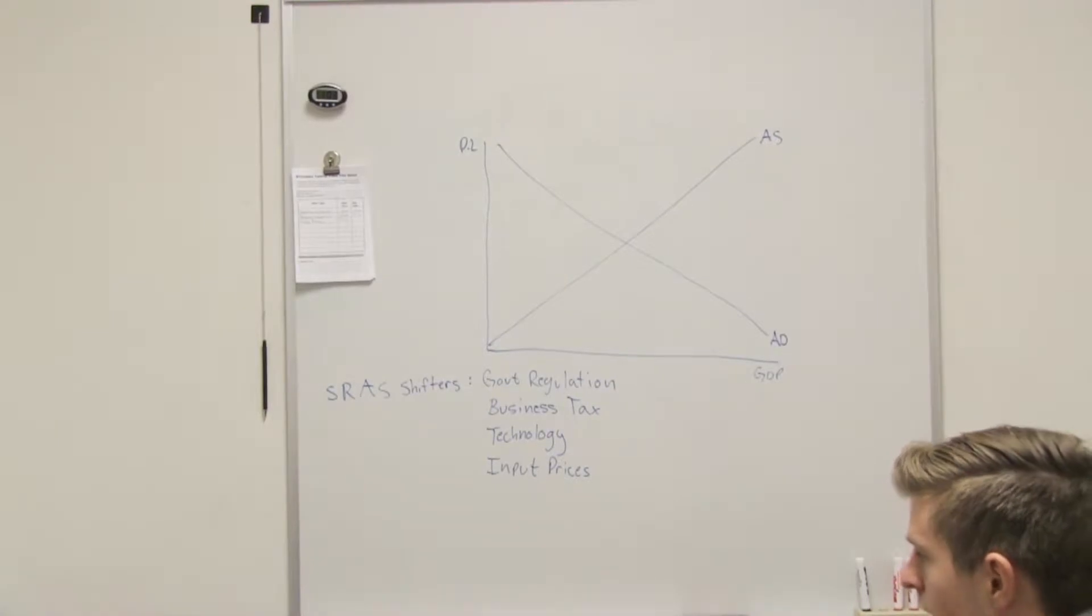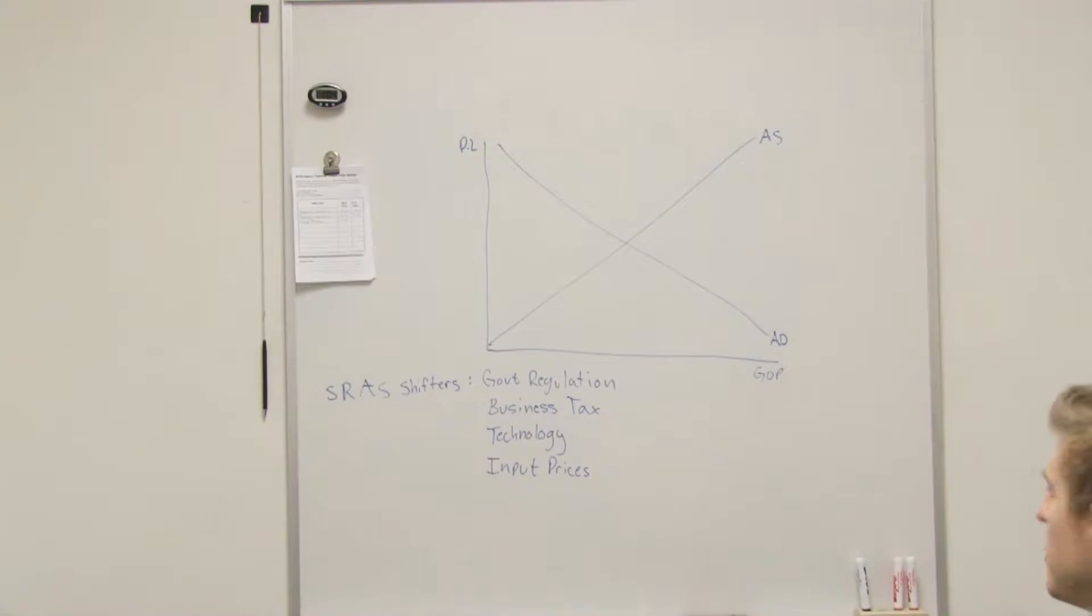What's an input price? Input price? Price. So like, say we make pizza and cheese is cheaper. Okay. So what's happening with input price? What's going to happen to the supply? We'll go right because we can produce more that way. Yeah, because it's cheaper, right? So our marginal costs are decreasing. Our marginal revenue is increasing. Our profits are increasing. So we're going to produce more.